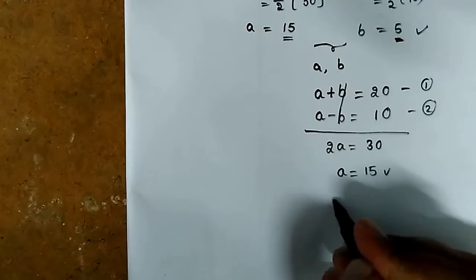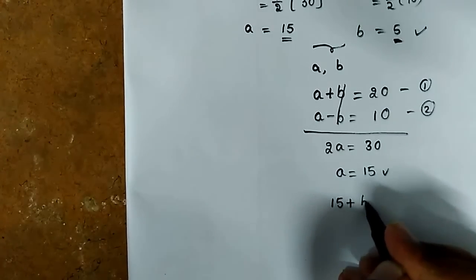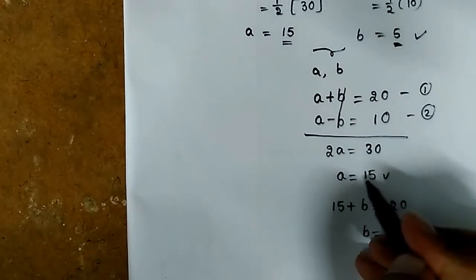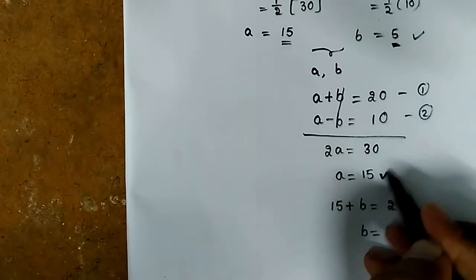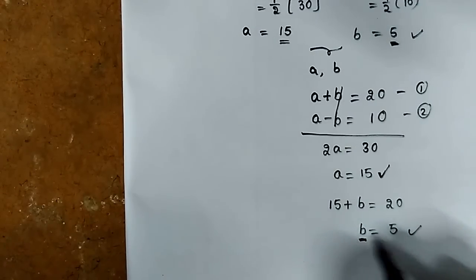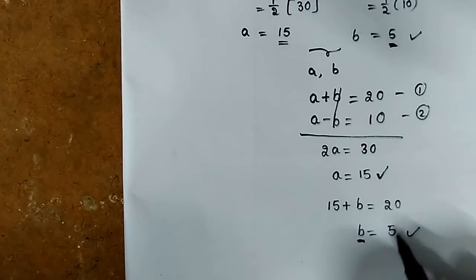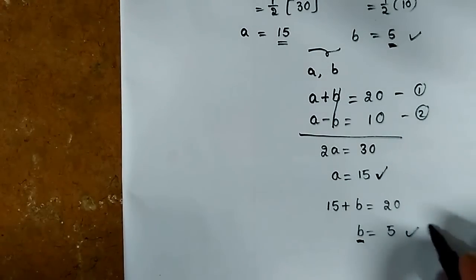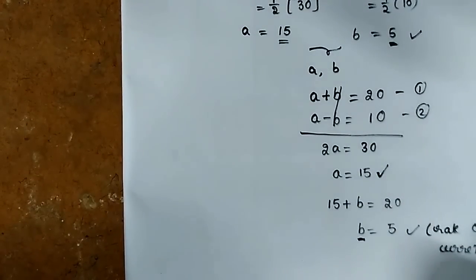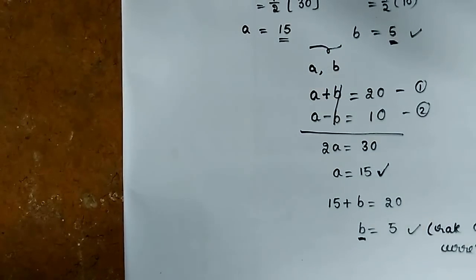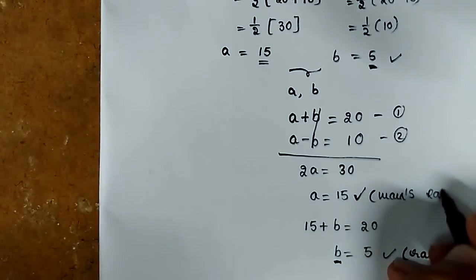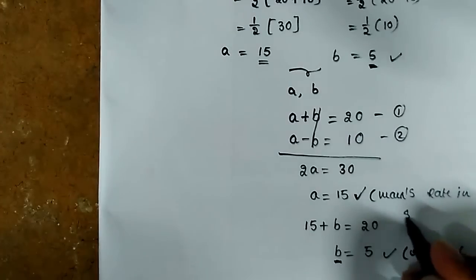So A is 15. Substituting A into equation 1, B is easy to find — it is 5. So man's speed in still water is 15, and rate of current is 5. That means man's rate in still water is 15 km per hour, and the rate of current is 5 km per hour.